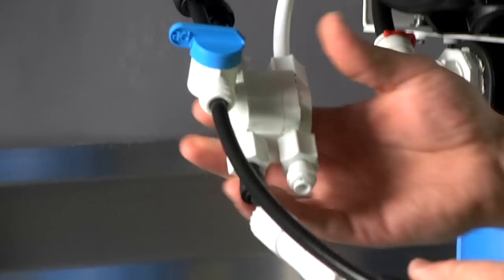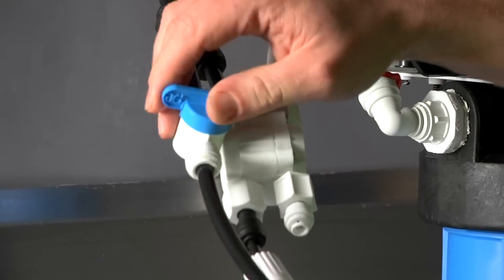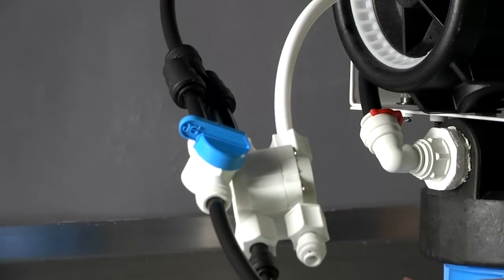Like all of our filters, our GX600 comes with a manual flush valve. Before we fire it up, we want to make sure it's closed. That's it.